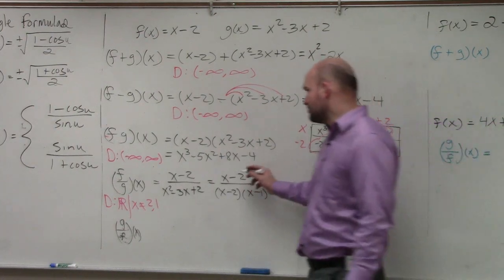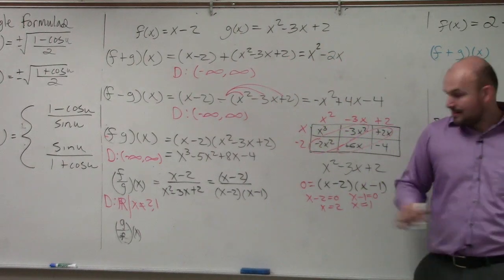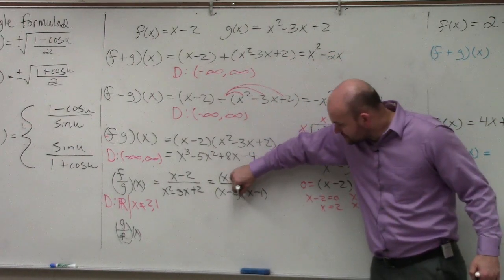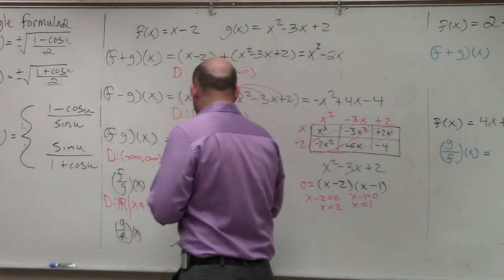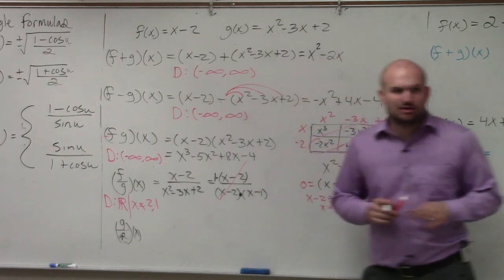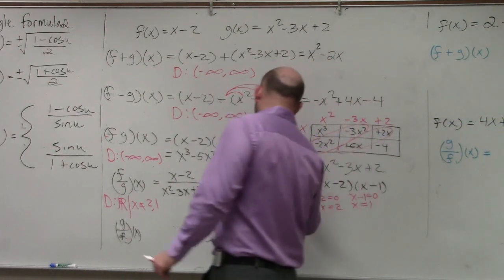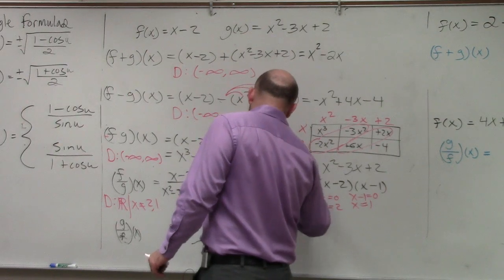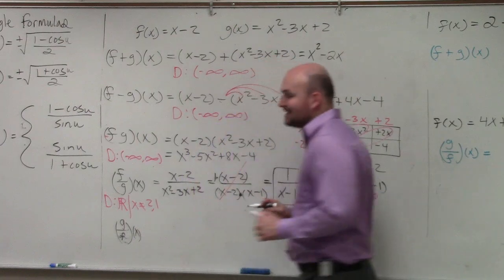Because in my simplified version, my x minus 2 and my x minus 2, since my denominators are separated by multiplication, these divide out. And remember, there's always a 1 up there. You just don't like get rid of it.